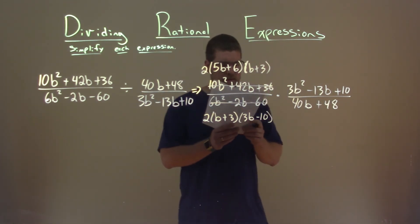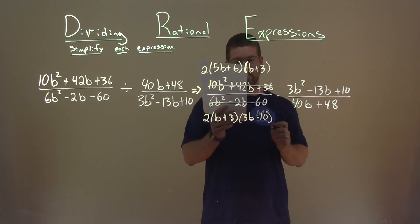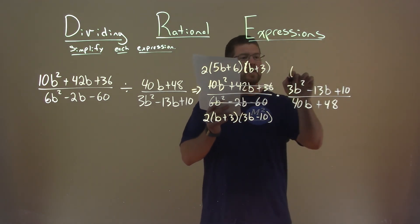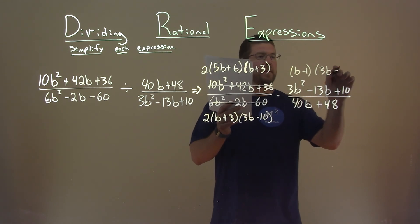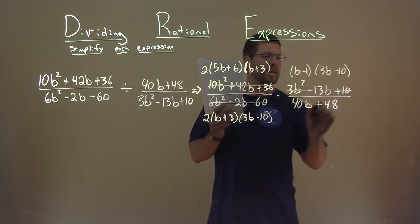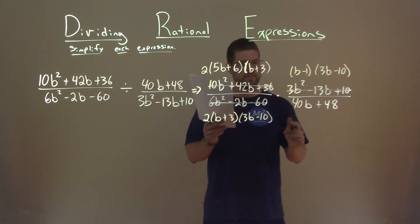Second part up here, 3b squared minus 13b plus 10, factors to be b minus 1 times 3b minus 10. Cancel that out or replace it.